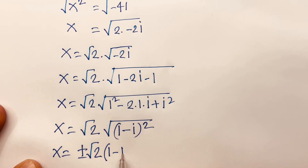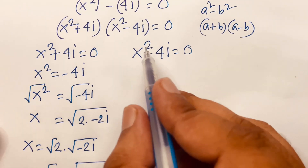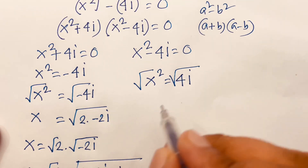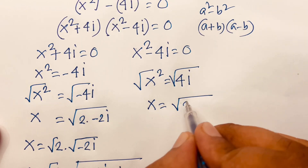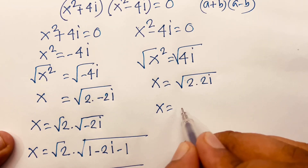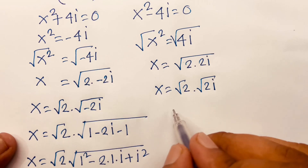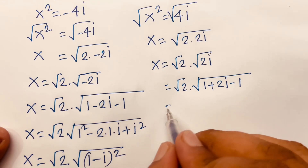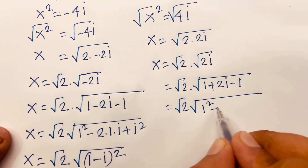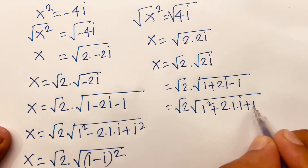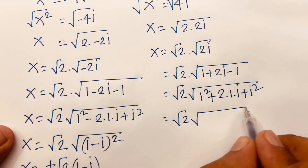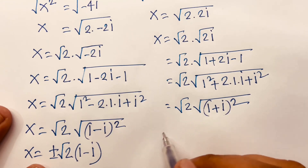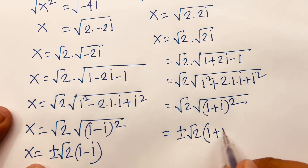Case 2: x² = 4i. Taking the square root, √(4i) = √(2 × 2i). Note that 2i = 1 + 2i - 1, so we write √2 · √(1² + 2·1·i + i²). This matches a² + 2ab + b², giving (1 + i)². The square root cancels, so x = ±√2 · (1 + i).